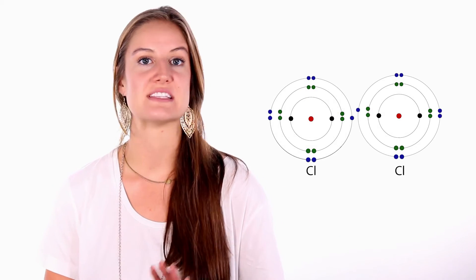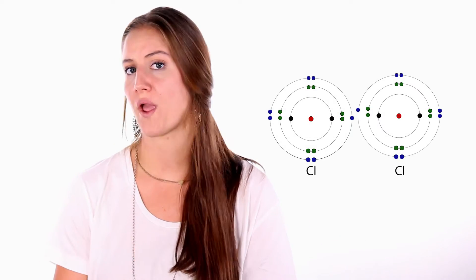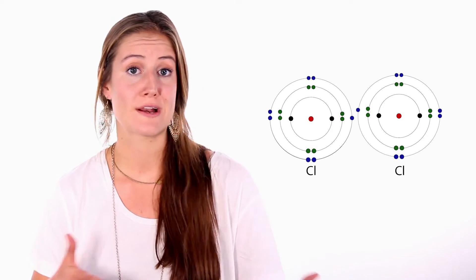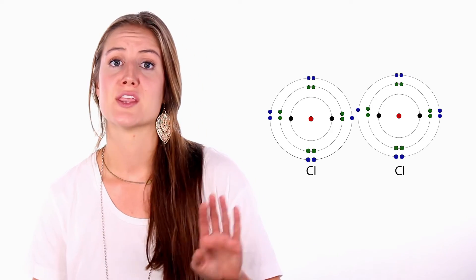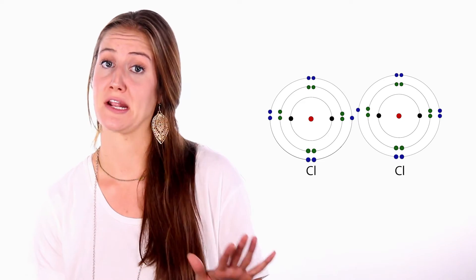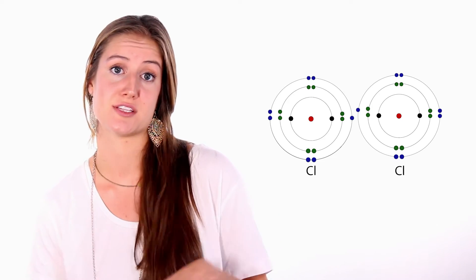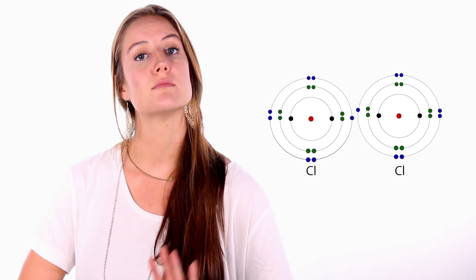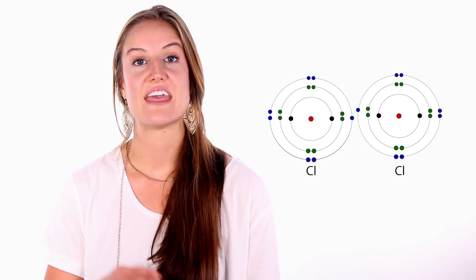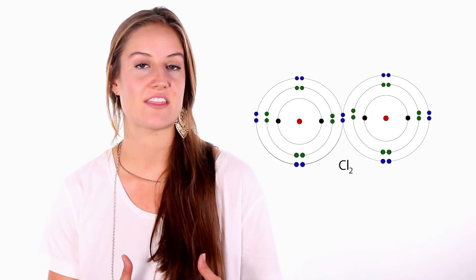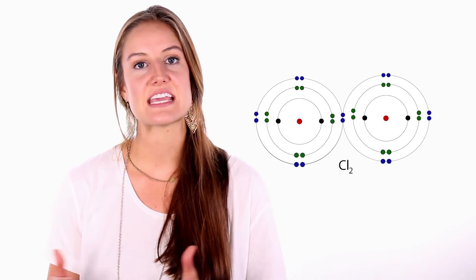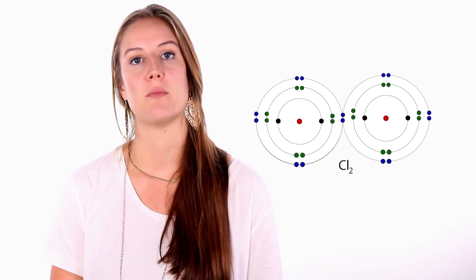Atoms that have a similar electronegativity tend to bond covalently. For instance, chlorine atoms are highly electronegative with seven electrons and just one away from achieving the octet rule. So when you get two chlorine atoms, they are going to say to one another, this is not going to be an ionic relationship — you aren't getting any of these electrons. The solution is to compromise and share, because they are more stable together than apart. Because they each are sharing one electron, this is called a single bond.